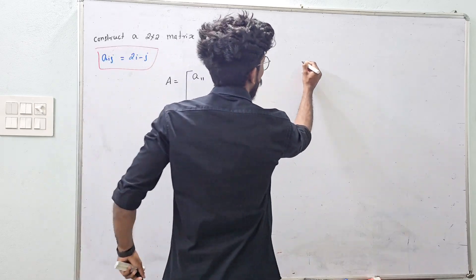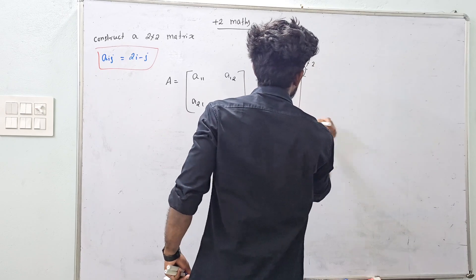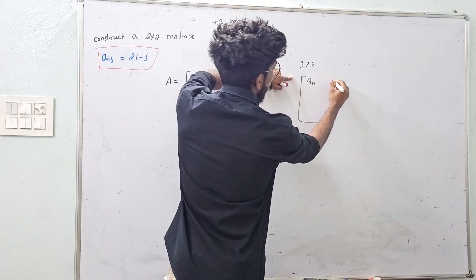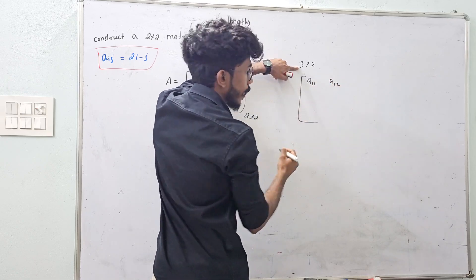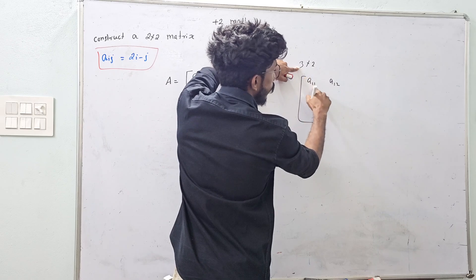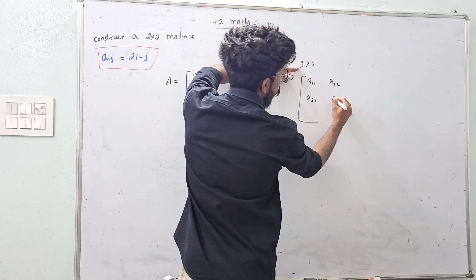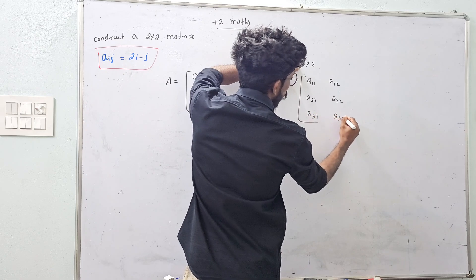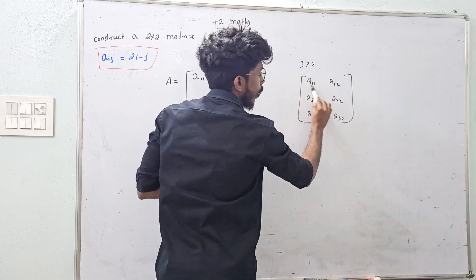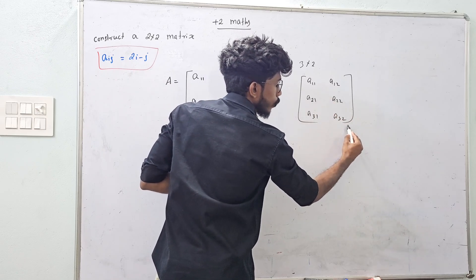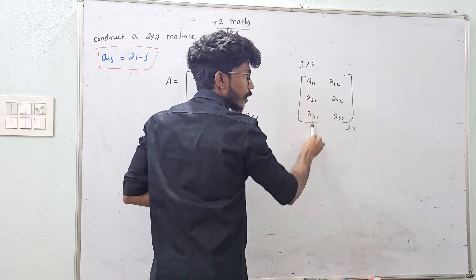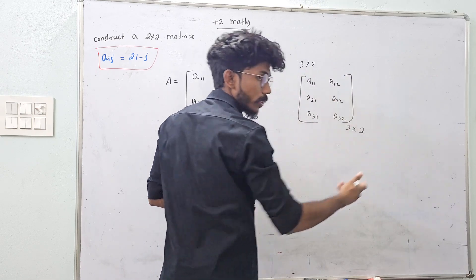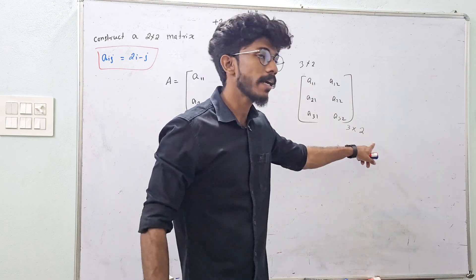Suppose a 3x2 matrix: A(1,1), A(1,2) — 3 rows, 2 columns. A(2,1), A(2,2). A(3,1), A(3,2). How many rows? 3. How many columns? 2. So it is a 3x2 matrix.